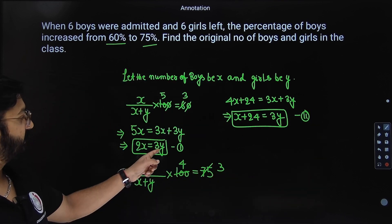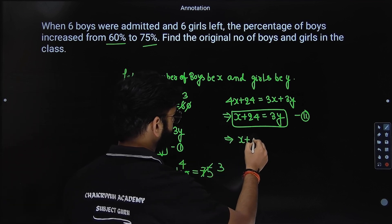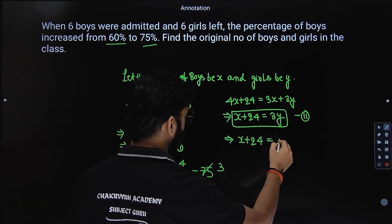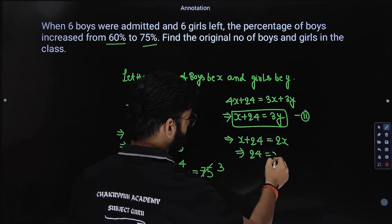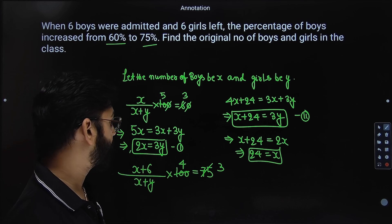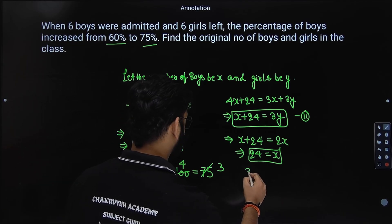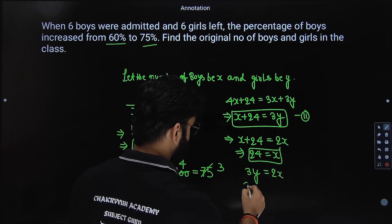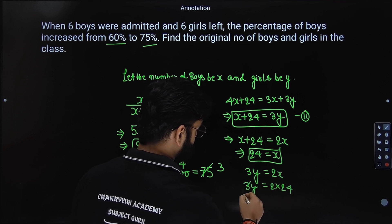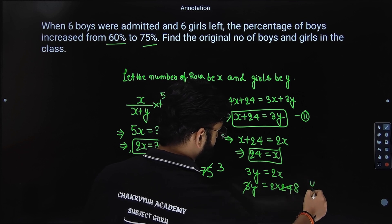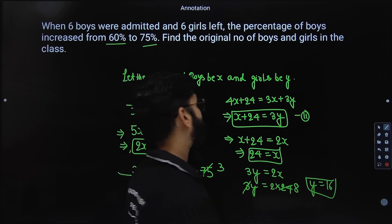So now if you see that 3y is 2x, substitute there. So x plus 24 equal to 2x. So 24 equal to x. So number of boys are 24. Now how will you find y? So we have 3y equal to 2x. So 3y is equal to 2 into 24. So 3 times 8 is 24, so y is 16. So number of boys are 24, number of girls are 16.